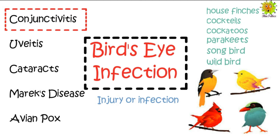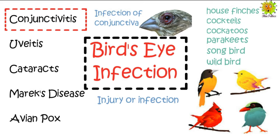Conjunctivitis is normally caused by bacterial infection that affects the conjunctiva. Conjunctiva is the tissue that lines the inside of the eyelid and covers the eye white. Due to this infection the tissue becomes red, swollen, and irritated.